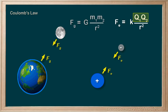On the bottom of each, we have the distance between the centers of mass, r. And this is squared. The force is inversely proportional to the distance squared for both of these situations.